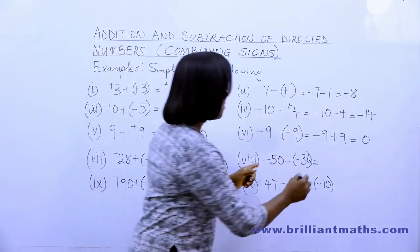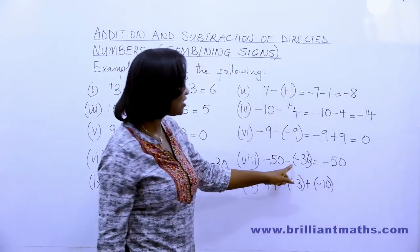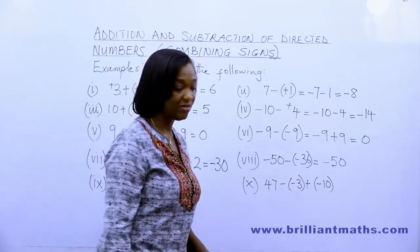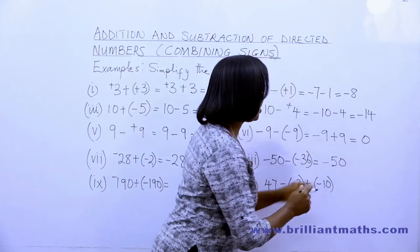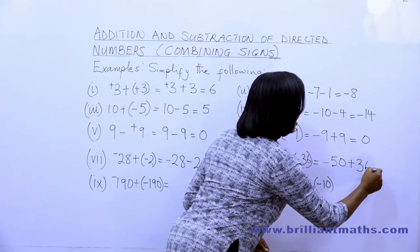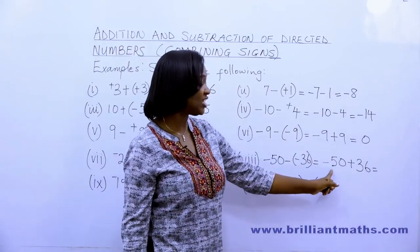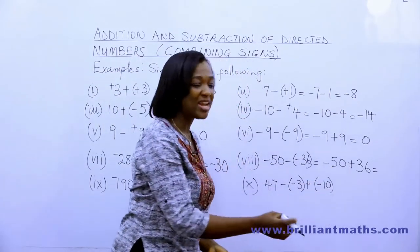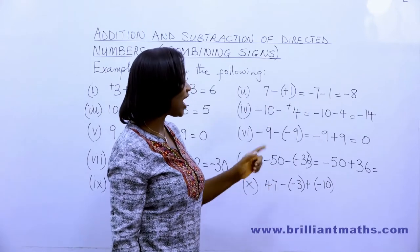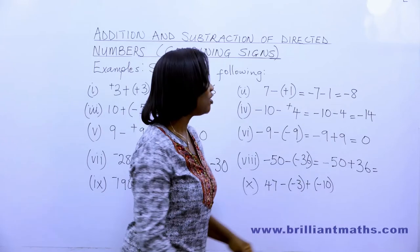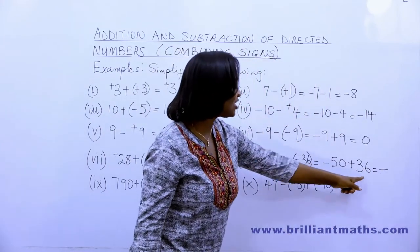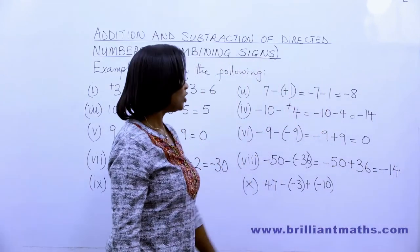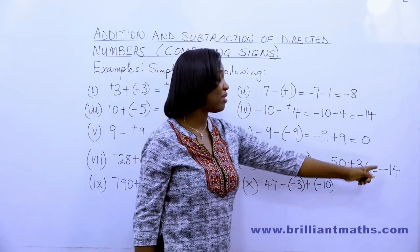The next example is very interesting: minus fifty minus minus thirty-six. Two negative signs in the middle means positive, so this becomes minus fifty plus thirty-six. Since fifty is larger than thirty-six, the answer carries the negative sign of fifty. We subtract thirty-six from fifty to get fourteen, so minus fifty plus thirty-six equals minus fourteen.